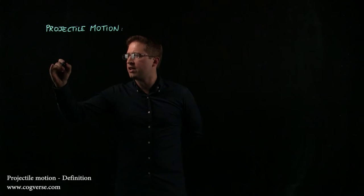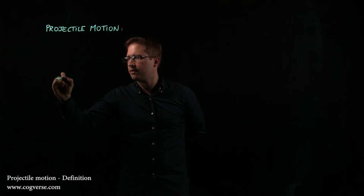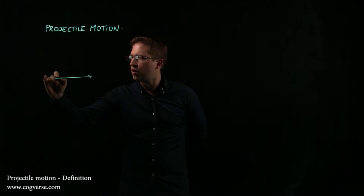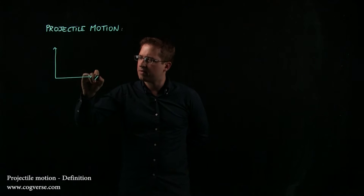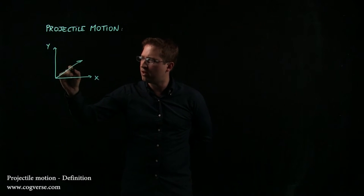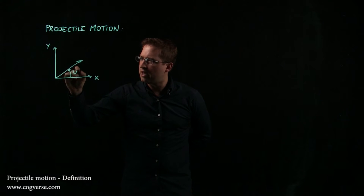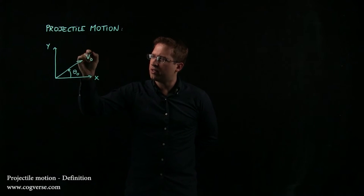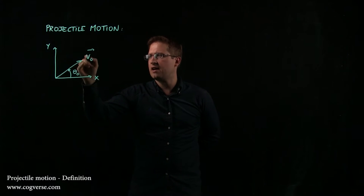So let's say we hit a golf ball for example. Let's draw a coordinate system x and y and let's assume we hit the golf ball at an initial angle or a launch angle theta naught with an initial velocity v naught.